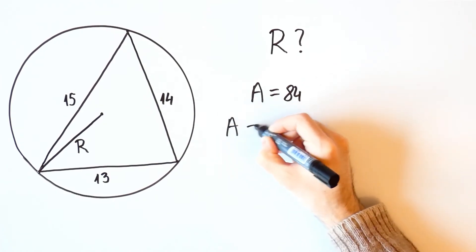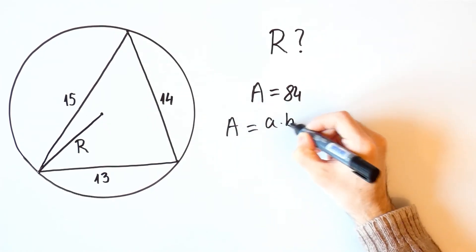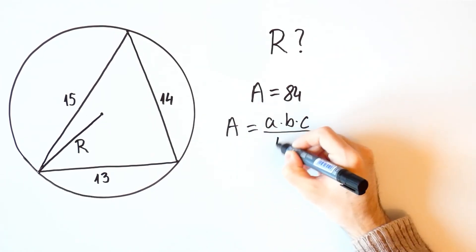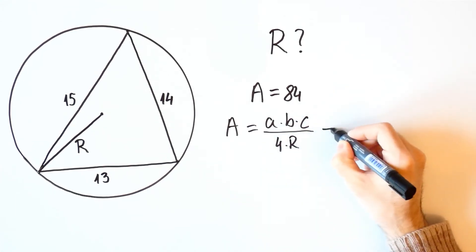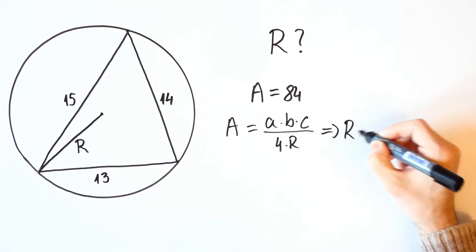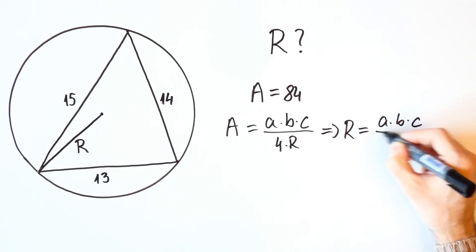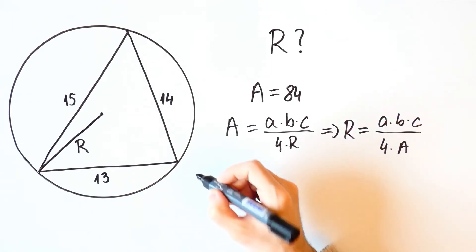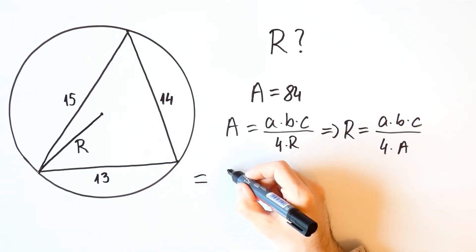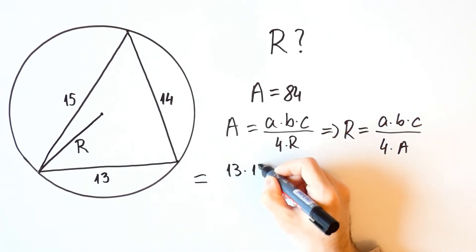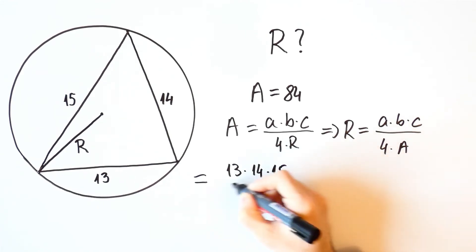The area is equal to A times B times C over 4R, which means that the circumradius is equal to A times B times C over 4 times the area. And in our case, that is equal to 13 times 14 times 15 over 4 times 84.